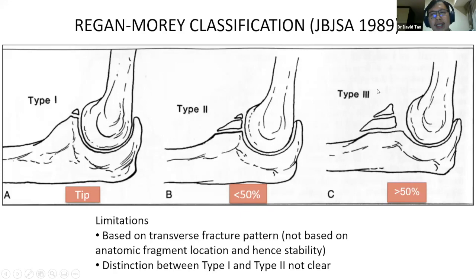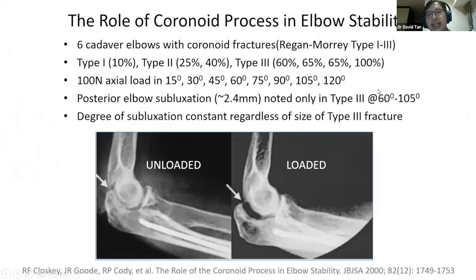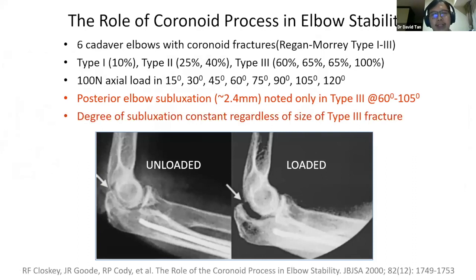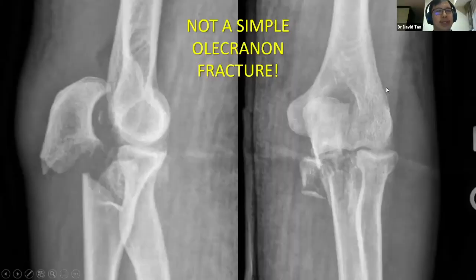In a cadaveric study assessing the role of isolated fractures of varying sizes according to the Regan-Morrey classification, the forearm was subjected to axial load with the elbow in varying degrees of flexion. Posterior elbow subluxation was always seen in type 3 fractures, especially between 60 to 105 degrees of flexion. Within the type 3 fracture group, the absolute size itself did not result in varying degrees of subluxation. This illustrates the important role of a sizable coronoid fracture fragment in ulnohumeral stability.